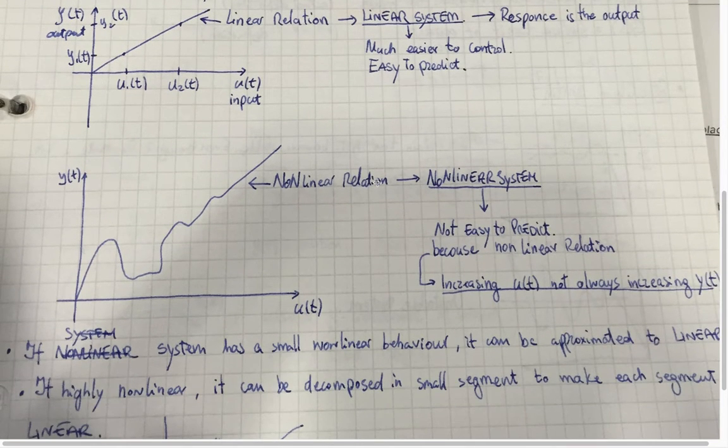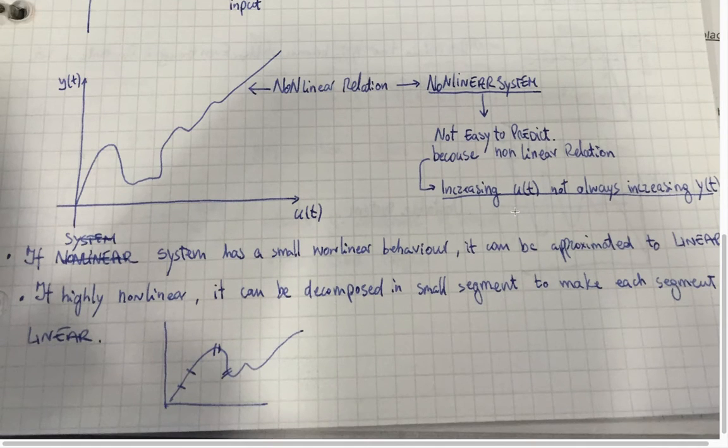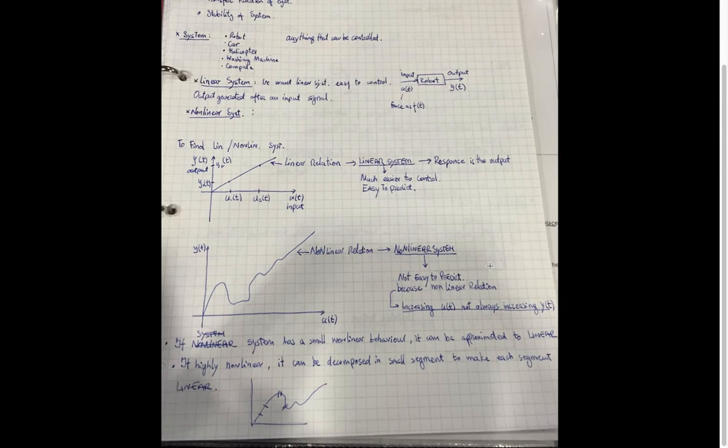We have non-linear systems when the system is not easy to control because of non-linear relationships. If a system has smaller non-linearity, then we're going to apply the linear system. If highly non-linear, then it can be a composite segment to make the system more easier to control.